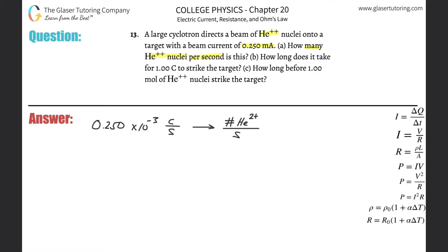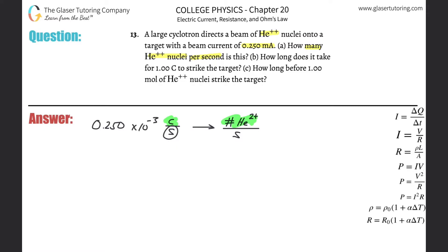So what do we need to really convert? Somehow we have to convert the coulomb value into the number of helium nuclei. The seconds don't change because we know the rate of coulombs per second and we have to find the rate of helium nuclei per second. So let's write down the given: 0.250 times 10 to the minus 3 coulombs per second. We've seen many times that we can go from knowing the amount of coulombs passing through a point to knowing the number of electrons passing through a point.